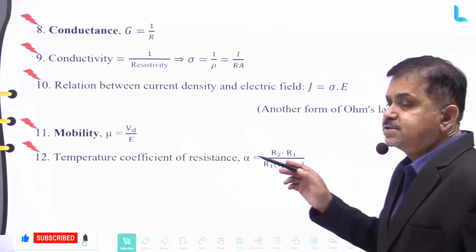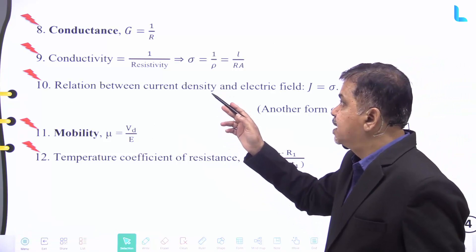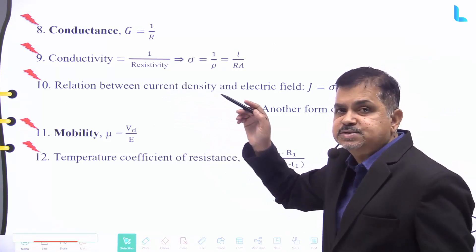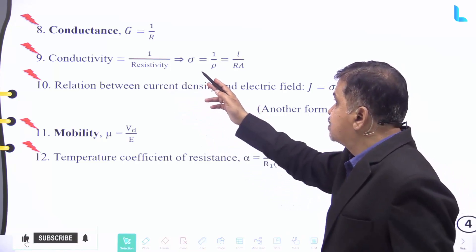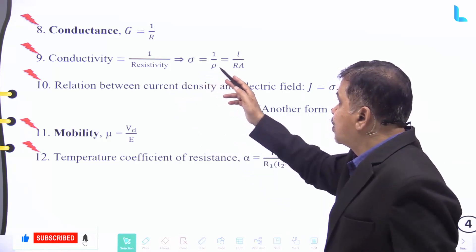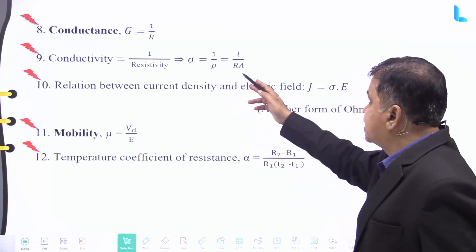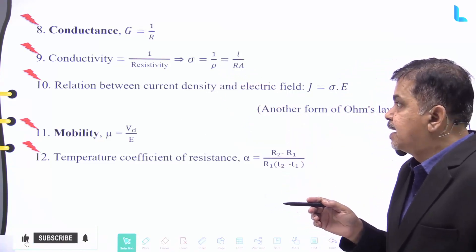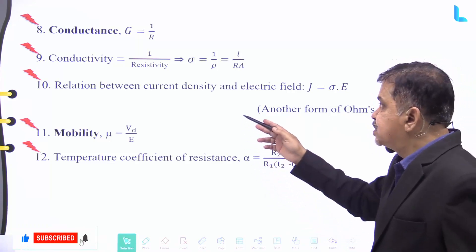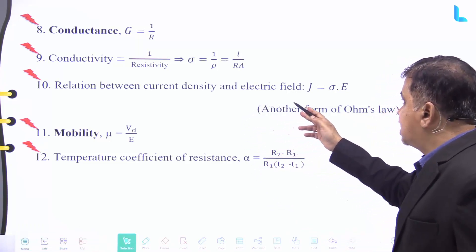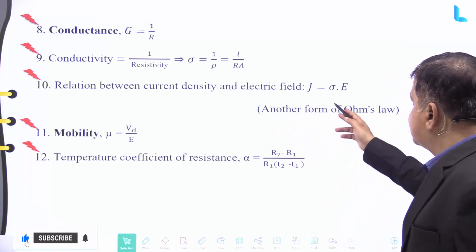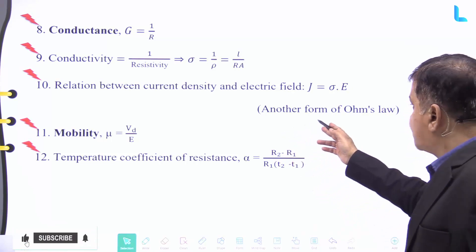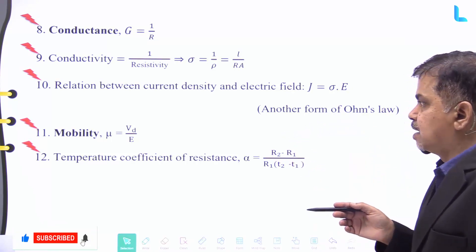The conductance G is given by 1 by R, and conductivity σ is given by 1 divided by resistivity ρ, which equals l divided by R × A. The relation between current density J and electric field E is given by J equal to σ × E, and this is another form of representation of Ohm's Law.